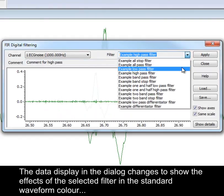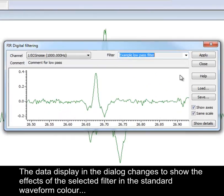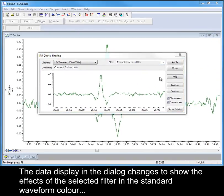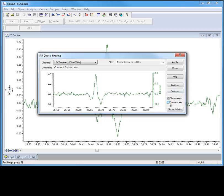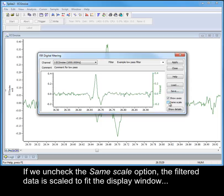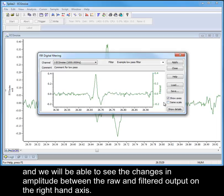The data display in the dialogue changes to show the effects of the selected filter in the standard waveform colour, with the original unfiltered data shown in grey. If we uncheck the same scale option, the filtered data is scaled to fit the display window, and we will be able to see the changes in amplitude between the raw and filtered output on the right-hand axes.